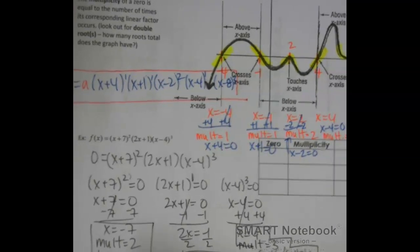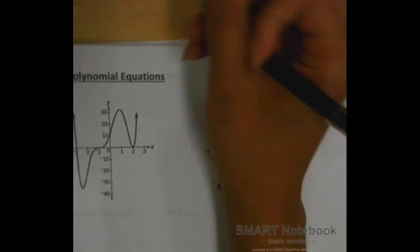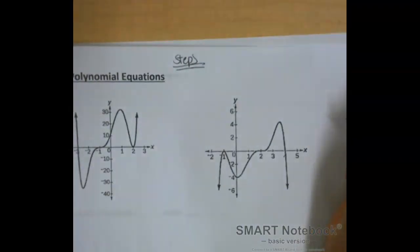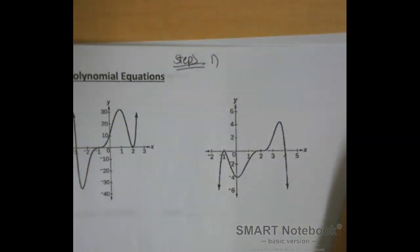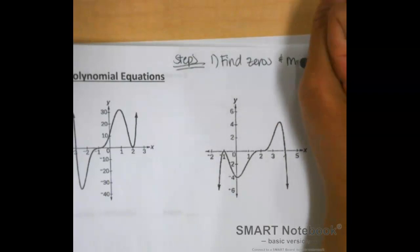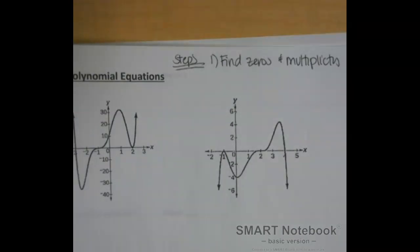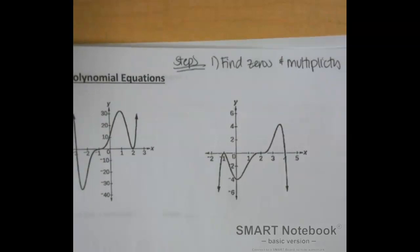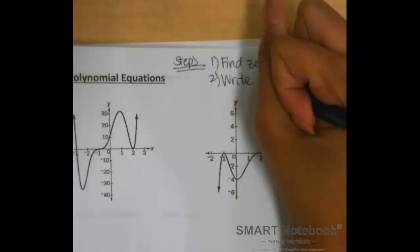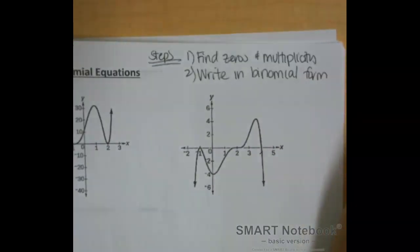On the next page, I'm going to give you some steps. I already gave you the first two on the last page, but here are a couple more. Step one: find your zeros — which are the same as your x-intercepts — and their multiplicity. Step two: write your x-intercepts in binomial form. Those are the first two steps we just did.